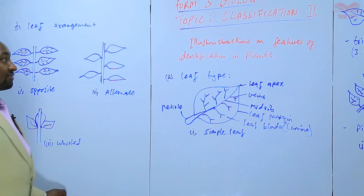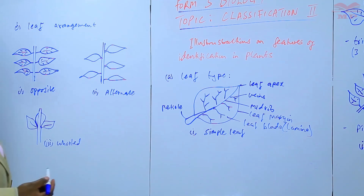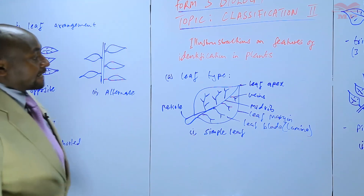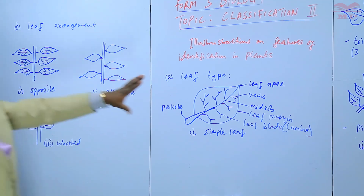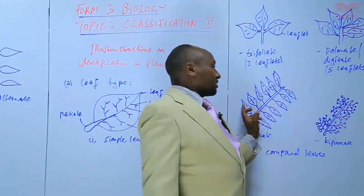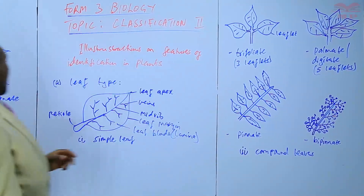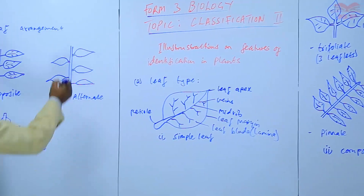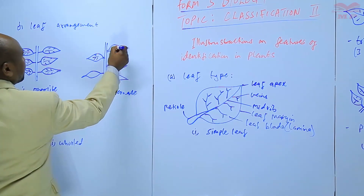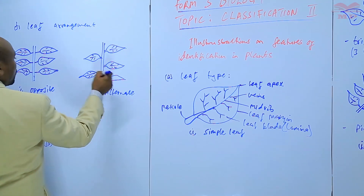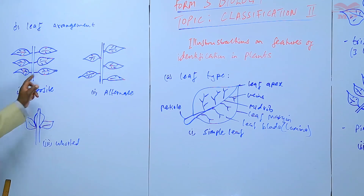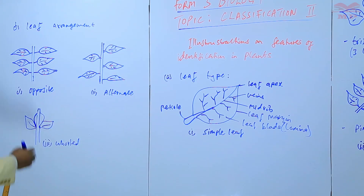So basically we have seen illustrations on features of identification in plants, targeting the leaf type — the simple and the compound — and the various types of compound leaves. These features we only apply in compound leaves. We have also been able to identify features in terms of leaf arrangement: opposite arrangement, alternate arrangement, or whorled arrangement.